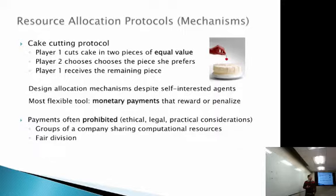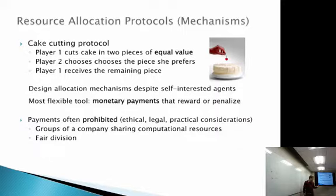For example, when groups within a company like Google are sharing computational resources, you cannot elicit payments or pay the participating groups. You just want to ensure they efficiently use the computational resources, but you cannot use real money since they're within the same company. Similarly, for fair division, money shouldn't cause a distinction between players — they should be treated equally.